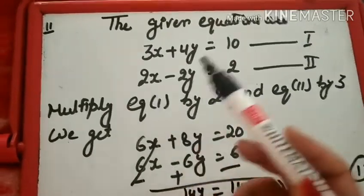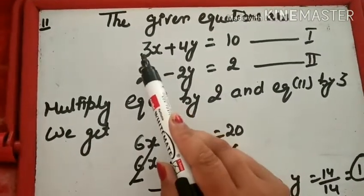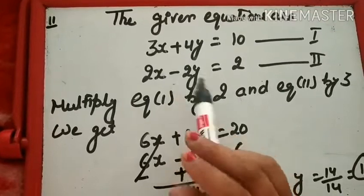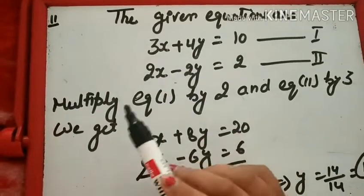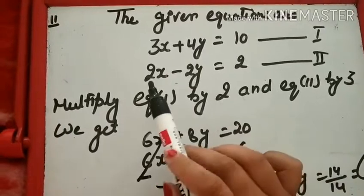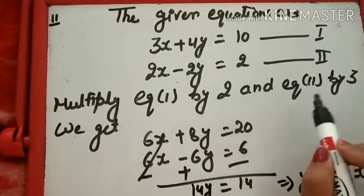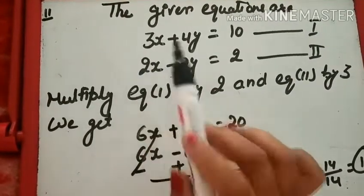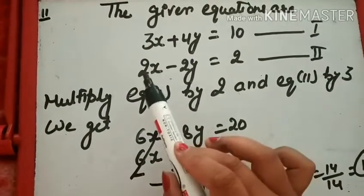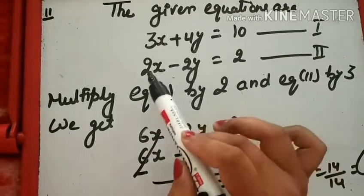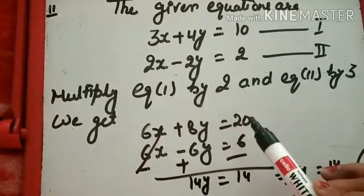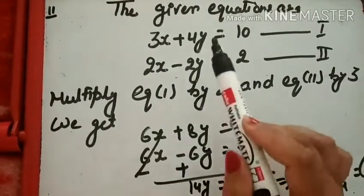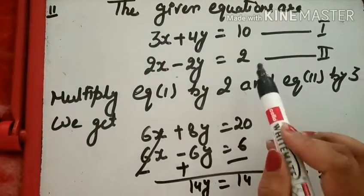अब हमने देखना है coefficient क्या है X के। First Equation का coefficient 3 है, Second वाले का 2 है। Second वाले से First को multiply, First वाले से Second को multiply करना है। Multiply Equation First by 2 and Equation Second by 3, we get: 6X + 8Y = 20 और 6X − 6Y = 6।